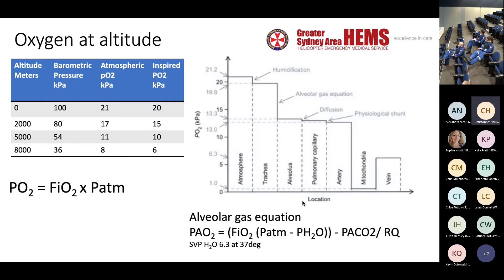The lowest height a helicopter can fly at is about 200 feet offshore in good weather and visibility, though most pilots would feel more comfortable at 500 feet. You can make a massive difference to a patient like that by bearing that in mind and choosing a route — which may involve a slightly longer flight — to a hospital where you don't have to fly over a mountain range.